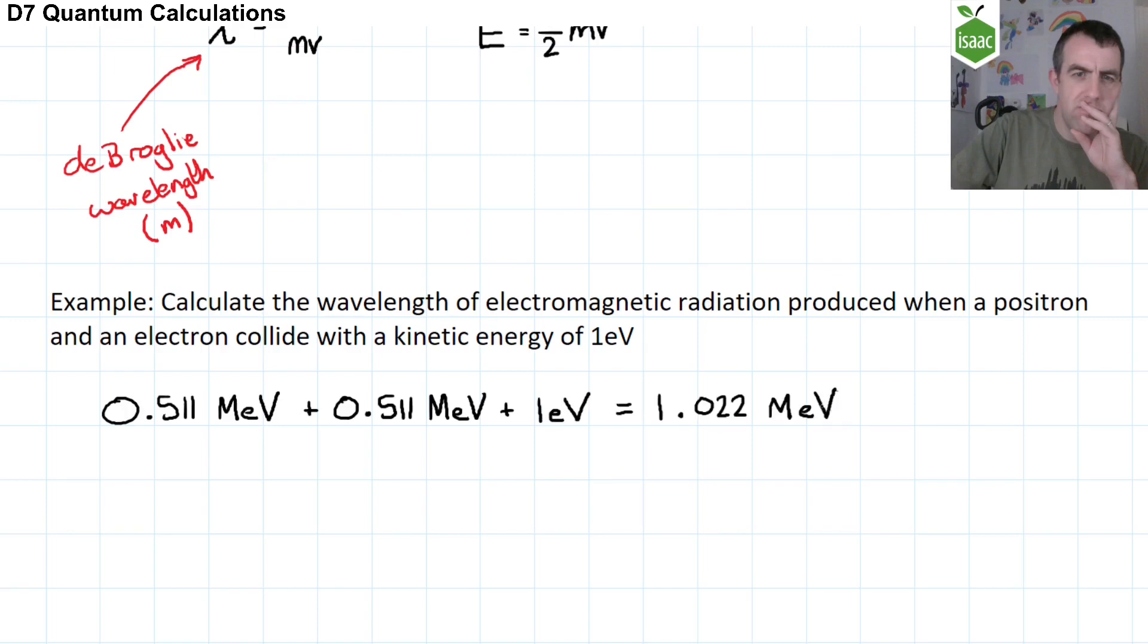So the energy in our collision is 1.022 mega electron volts, and a tiny bit more because of that one electron volt. But I'm going to round those significant figures away anyway, so I won't write it. Now because we are interested in the wavelength of electromagnetic radiation, we're going to use this equation here.